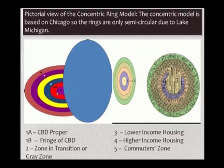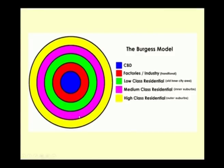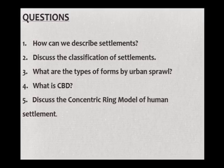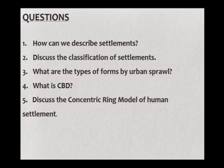In the concentric ring model you have: first the CBD proper, then the fringe of CBD, then the zone in transition or gray zone, then lower income housing, higher income housing, and the commuters' zone — from intensely high density to low density, low rent to high rent. At the end of this lecture, we have covered structure and form of settlements and looked into linear, non-linear and circular patterns. Review questions: How can we describe settlements? Discuss the classification of settlements. What are the types of forms by urban sprawl? What is CBD? Discuss the concentric ring model of human settlement. That brings us to the end of this lecture. Thank you.